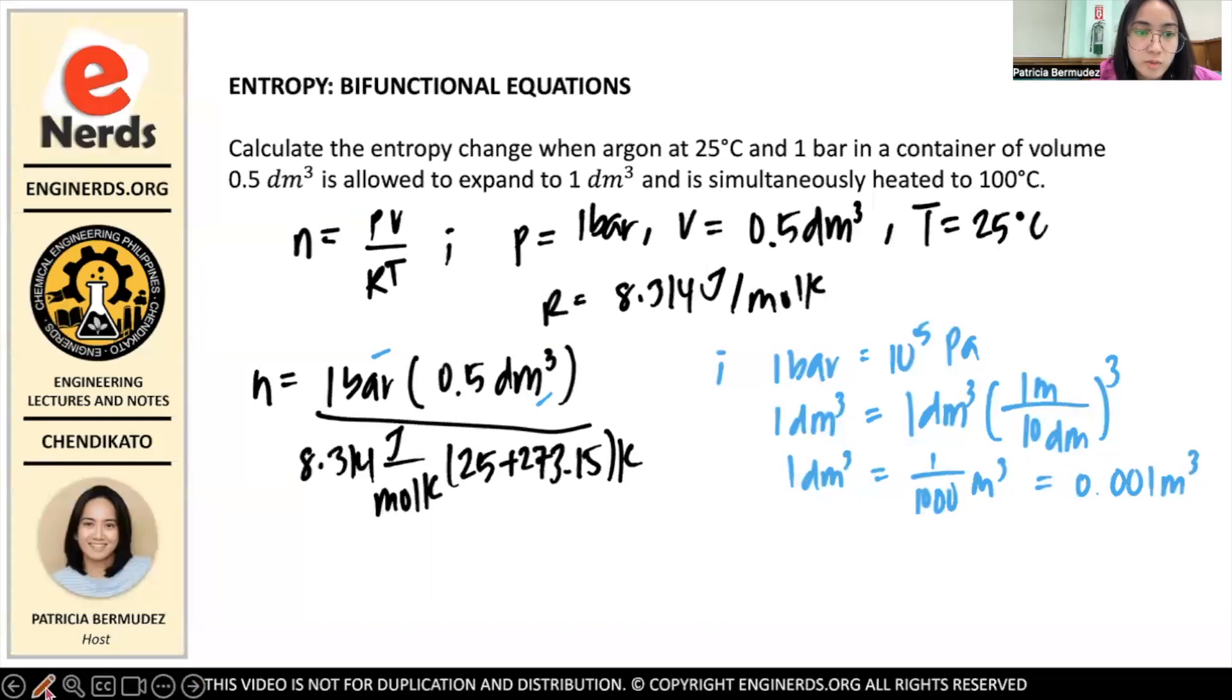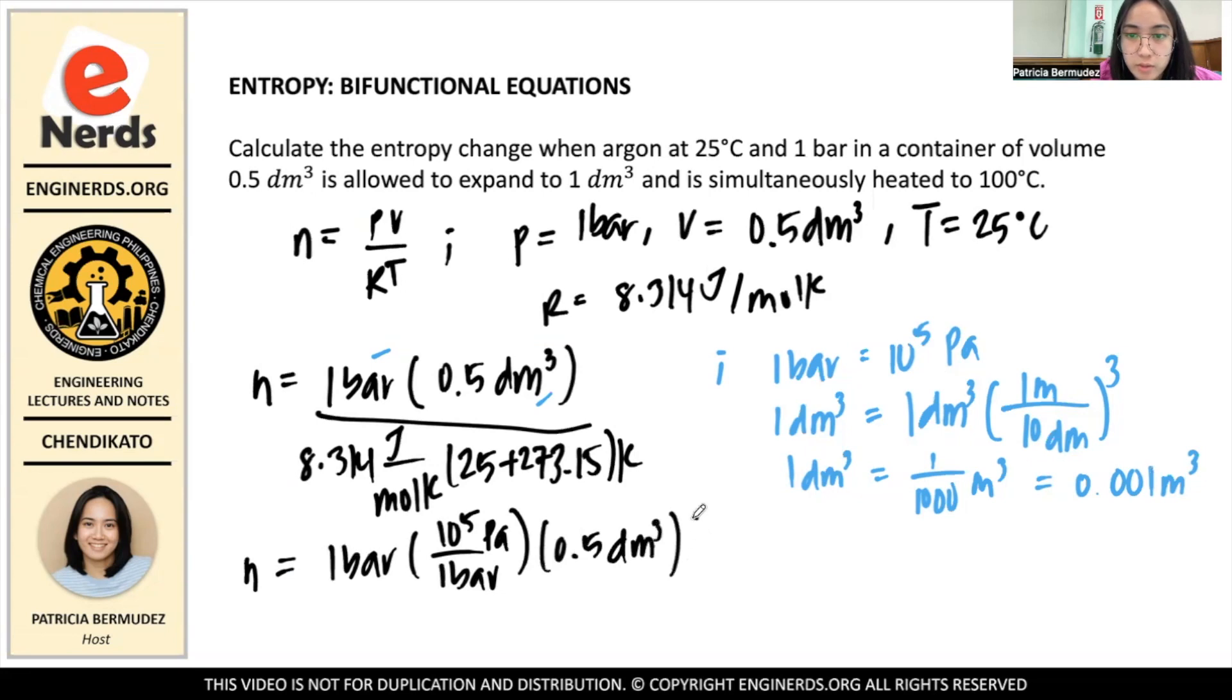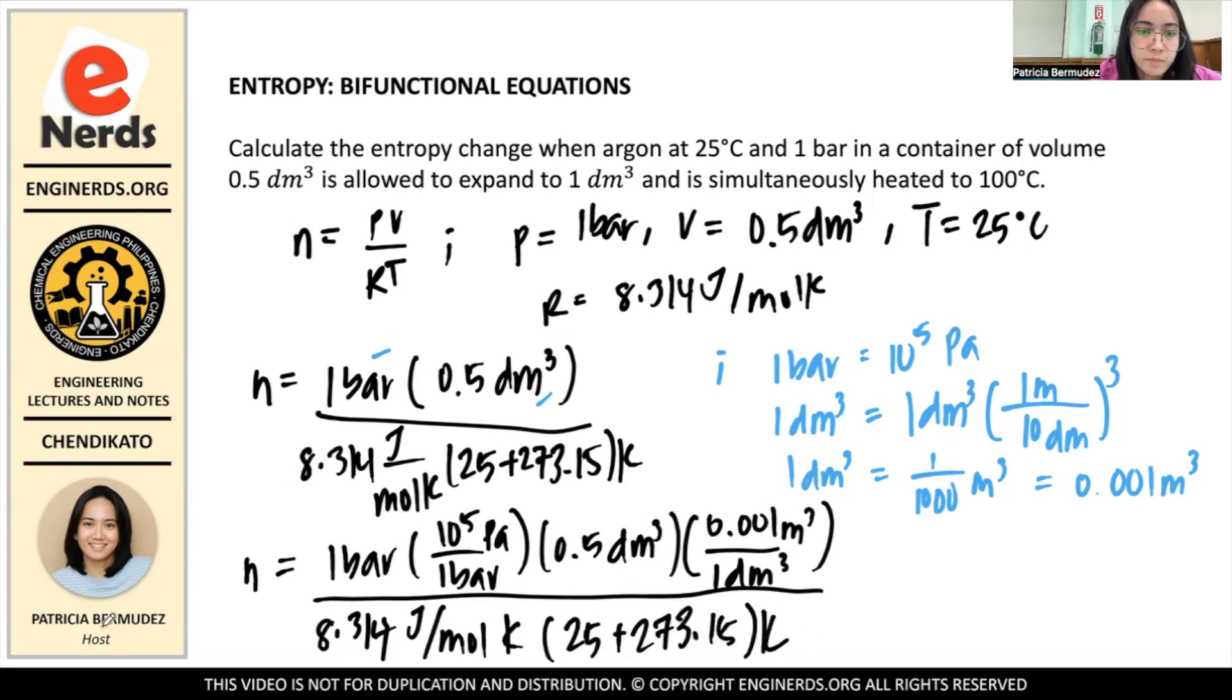Then we add these conversion factors here so we can cancel the joules. So our N is 1 bar equals 10⁵ Pascals, and then 0.5 dm³ equals 0.001 meter³. And then over 8.314 joules per mole kelvin times 25 plus 273.15 kelvin. And we also know that Pascal·meter³ equals joule.